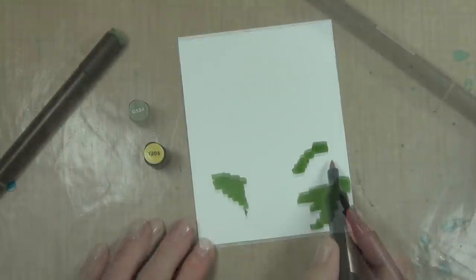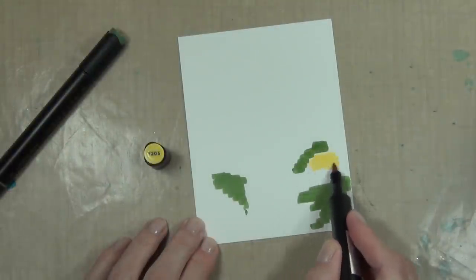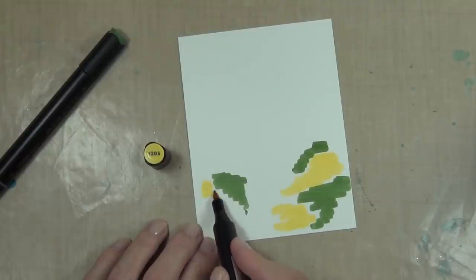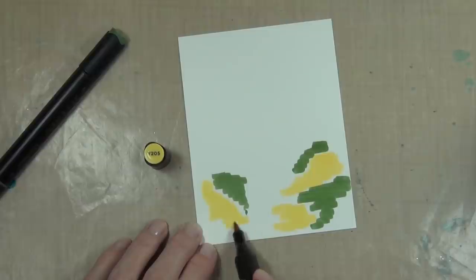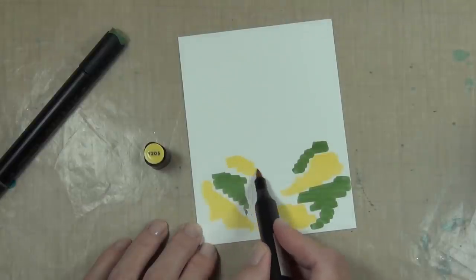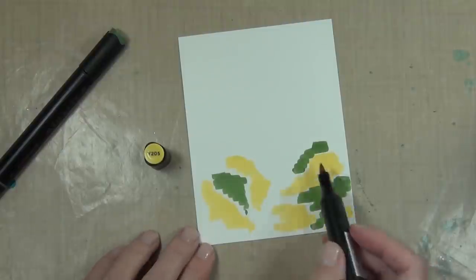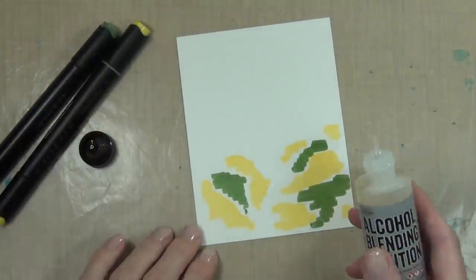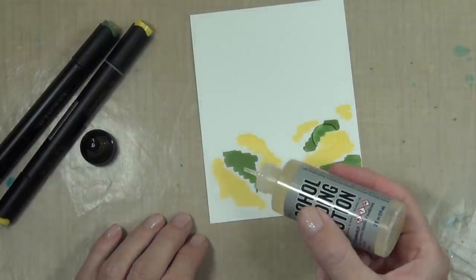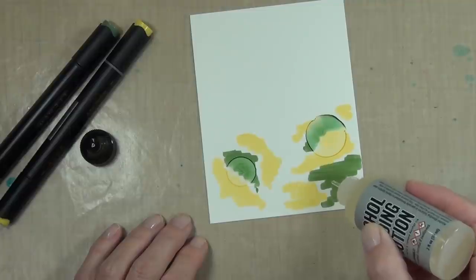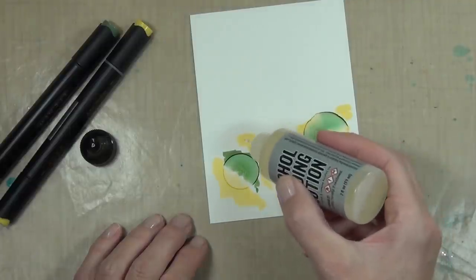Now the Artist Markers from Altenew are alcohol-based, and I know that when we use alcohol inks on the Yupo paper they blend really beautifully, so I thought I'd see how they go. The colors I'm using, I wanted to do some subtle colors today, so I've chosen a green and a yellow color. I'll list the colors that I use at the blog, the link will be below.